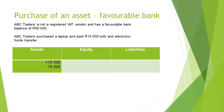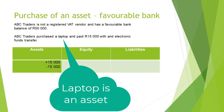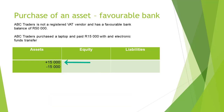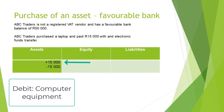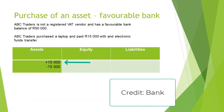The laptop that is purchased is an asset. The laptops of the business increase, and therefore we will debit the account called computer equipment. Assets will have a plus 15,000 Rand on the accounting equation.